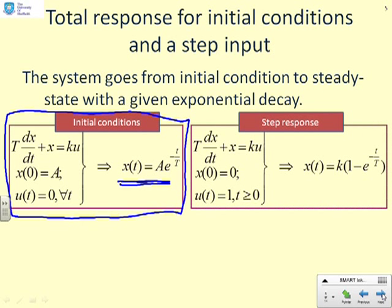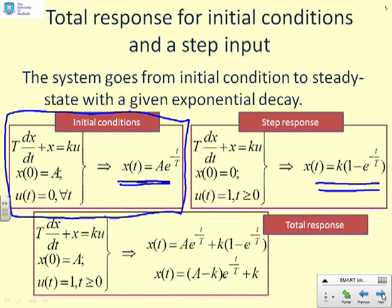What if we had a zero initial condition and a step input? Then we got a response like this: x(t) equals K times (1 minus e to the minus t over T). So therefore, if we want to find the response with a step input and a non-zero initial condition, we just add these two together. You'll see the total response written down here. We've simply added the response for a non-zero initial condition, no input, to the response for a step input with a zero initial condition.